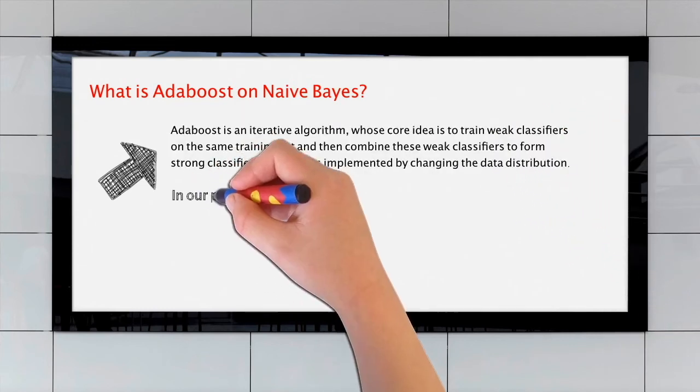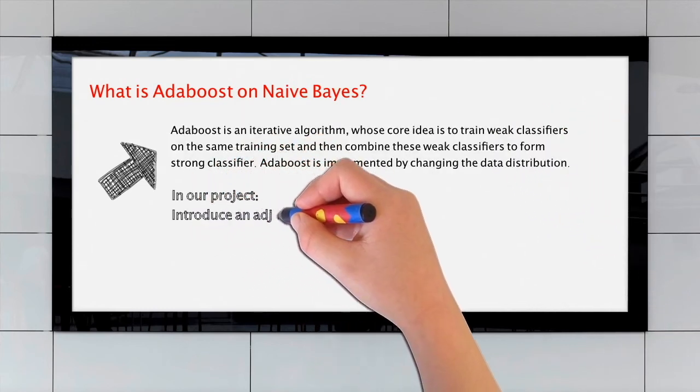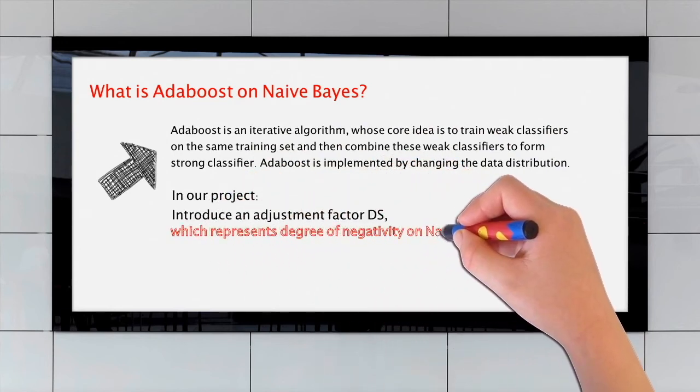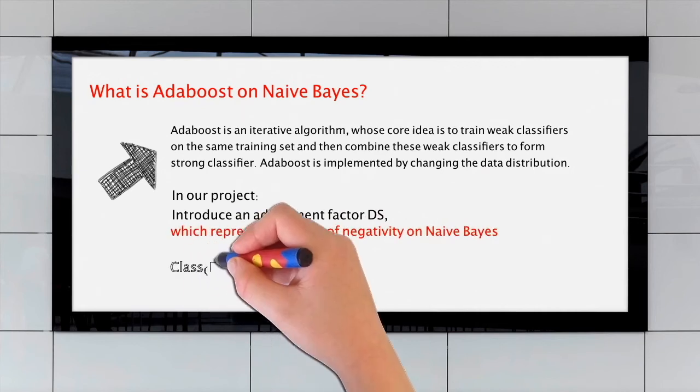In our project, we introduce an adjustment factor DS, which represents degree of negativity on Naive Bayes. Hence, the formulas are illustrated as the following.